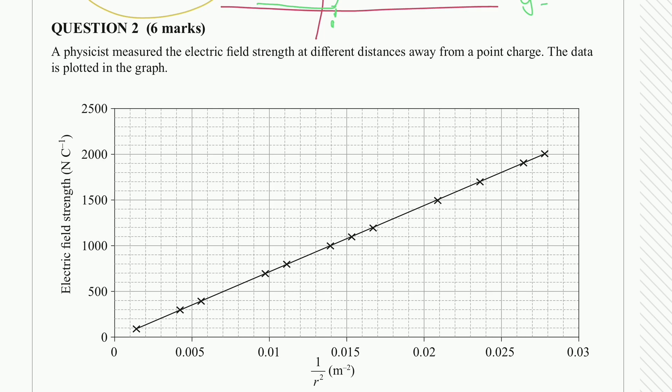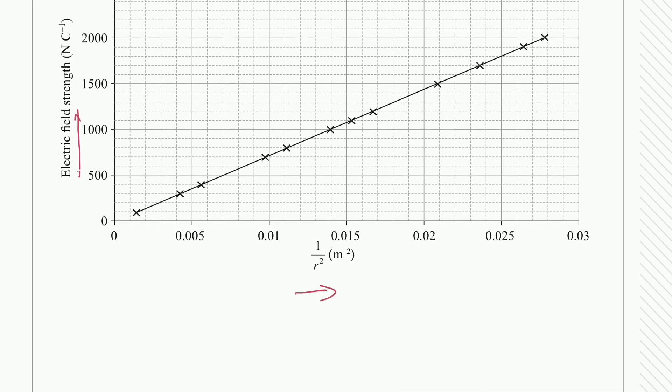So let's have a look at our graph, see what information we have. On our y-axis we have the electric field strength and on our x-axis we have the 1 over r squared.